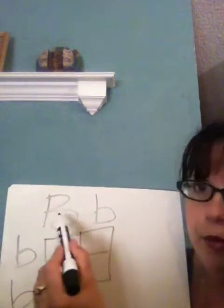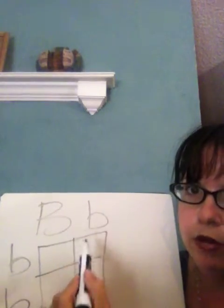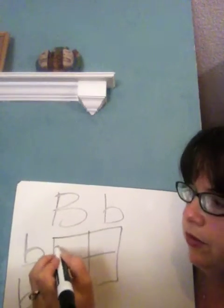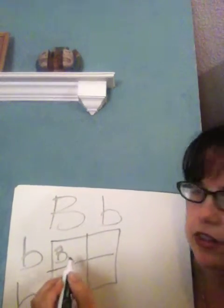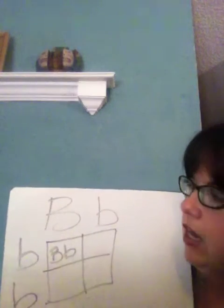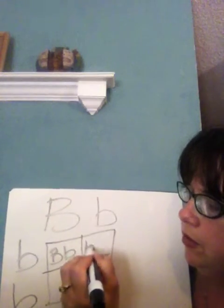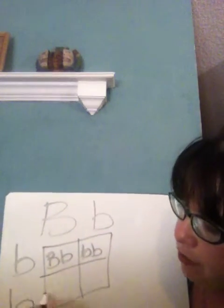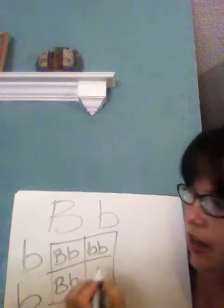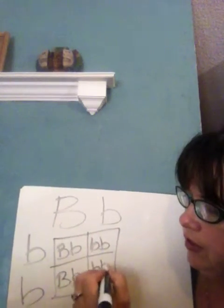So at the top, always you make them go down. So we got big B in this square and then dad on the side comes into this little b. And then you have little b from mom, little b from dad. Then you have big B from mom, little b from dad coming on the side. And then you have little b, little b down here.